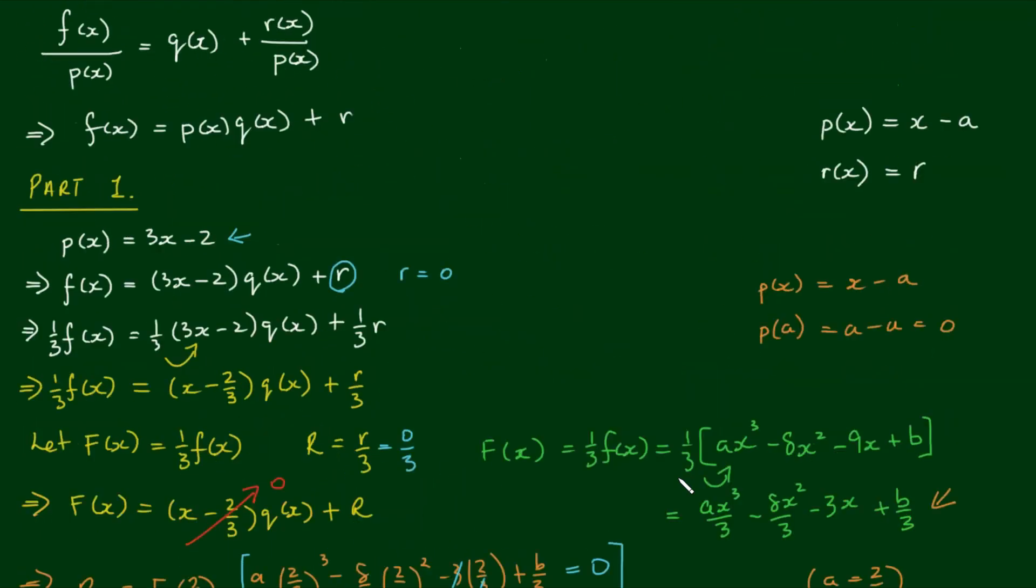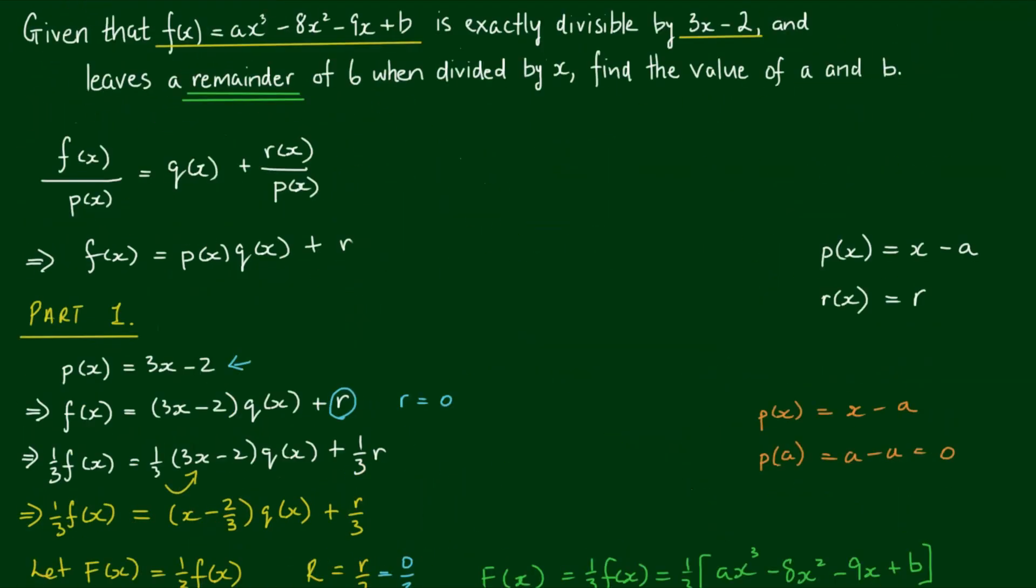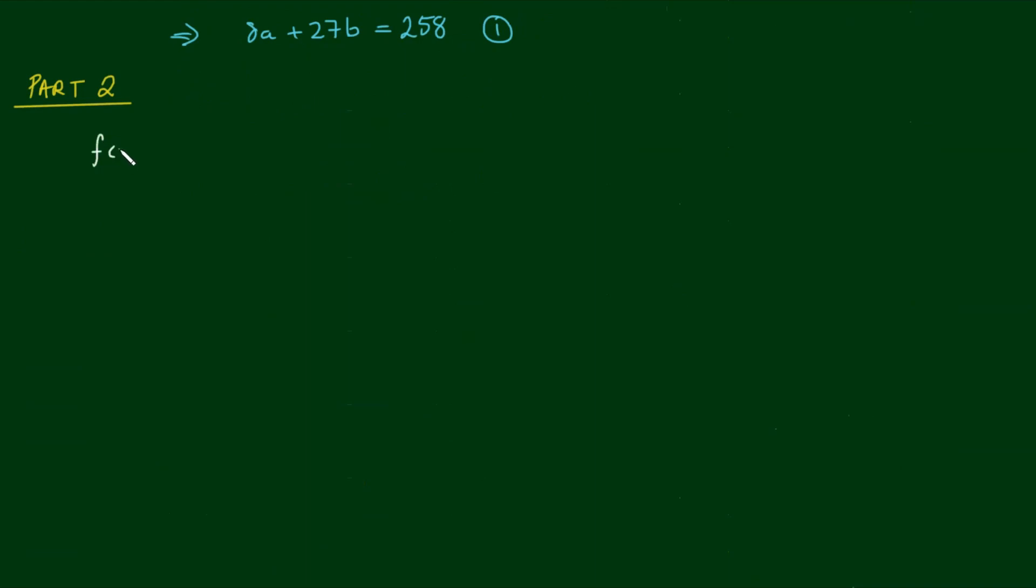I'm just going to scroll back up to the problem statement, because for part 2, we're left with a remainder of 6 when we divide by x. So, back to the polynomial remainder theorem equation, f(x) equals the divisor p(x) by the quotient q(x) plus r. When we divide by x, the divisor p(x) is simply x, which I can write as x minus 0. So, therefore, a equals 0, because this is in the form of x minus a.